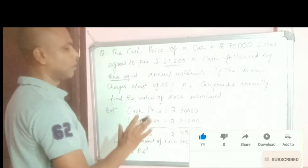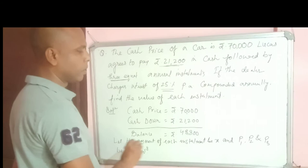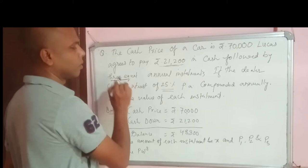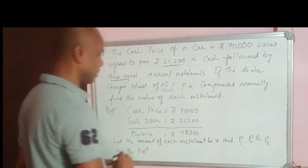So after that we are going to find out the installment. Let the amount of each installment be X. And we have got three installments. So we will write three present worths. So P1, P2 and P3 will be the present worths.